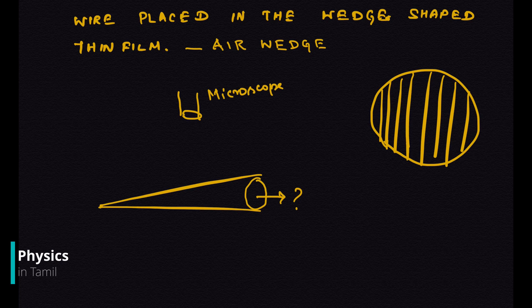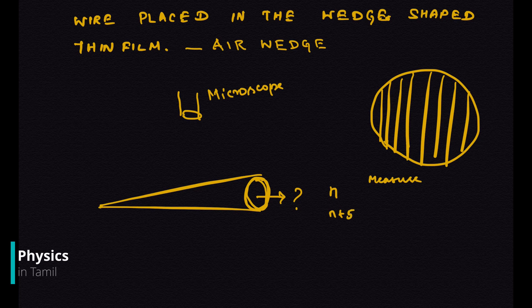So how to do this experiment? Once this arrangement is properly set, we have fringes. We have to start with the position and microscope measurement. We have to start with 5 to 5, or 10 to 10 fringes, measure the distance, and find the bandwidth.